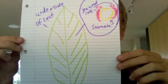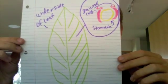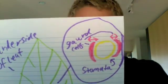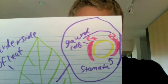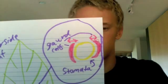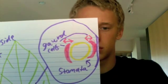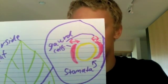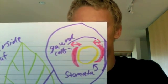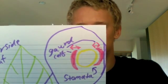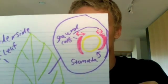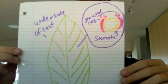The next are guard cells. They're on the underside of leaves, and there are little pores called stomata. The guard cells can open and close, deciding the width of the pore, and control how much goes in and out.